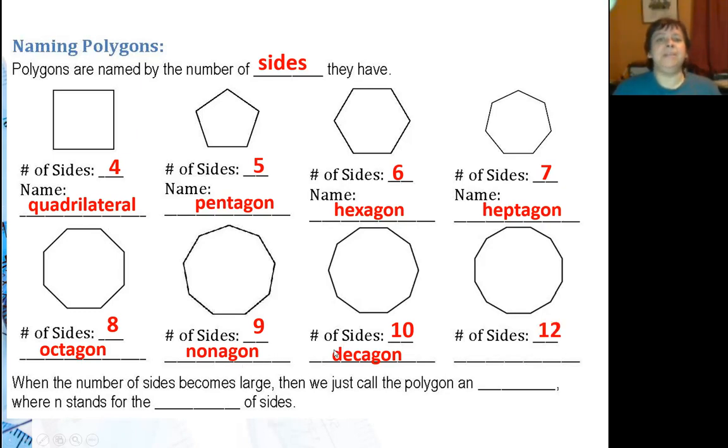And finally the twelve sided polygons which is a dodecagon. The do is like adding two to the decagon so it's twelve.